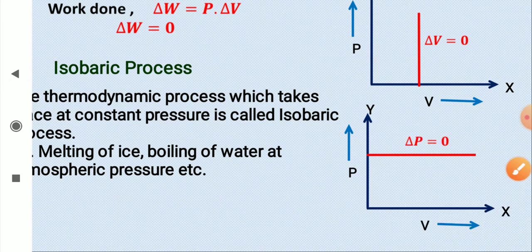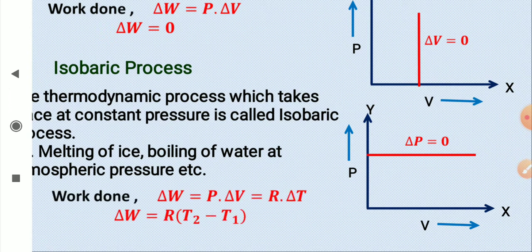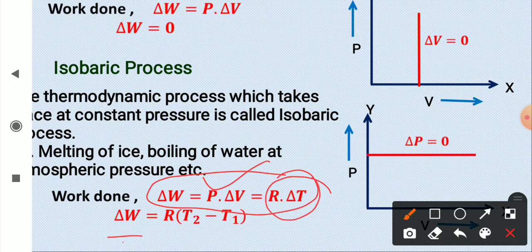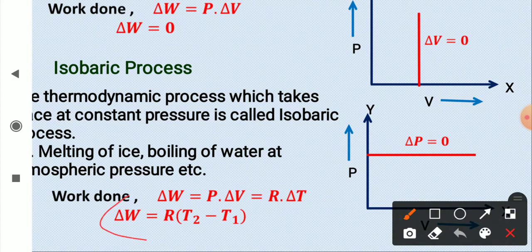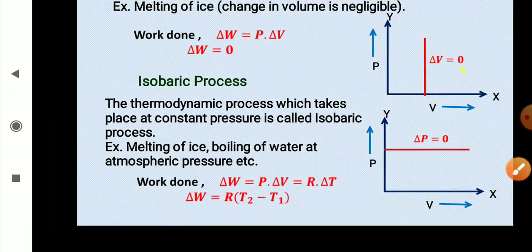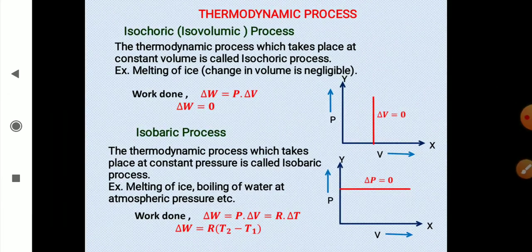In the isobaric process, the change in pressure is zero (ΔP = 0). The work done in this process is W = P·ΔV, and since P·ΔV = R·ΔT, the work done equals R·ΔT, which is R(T₂ − T₁) — the universal gas constant multiplied by the change in temperature.